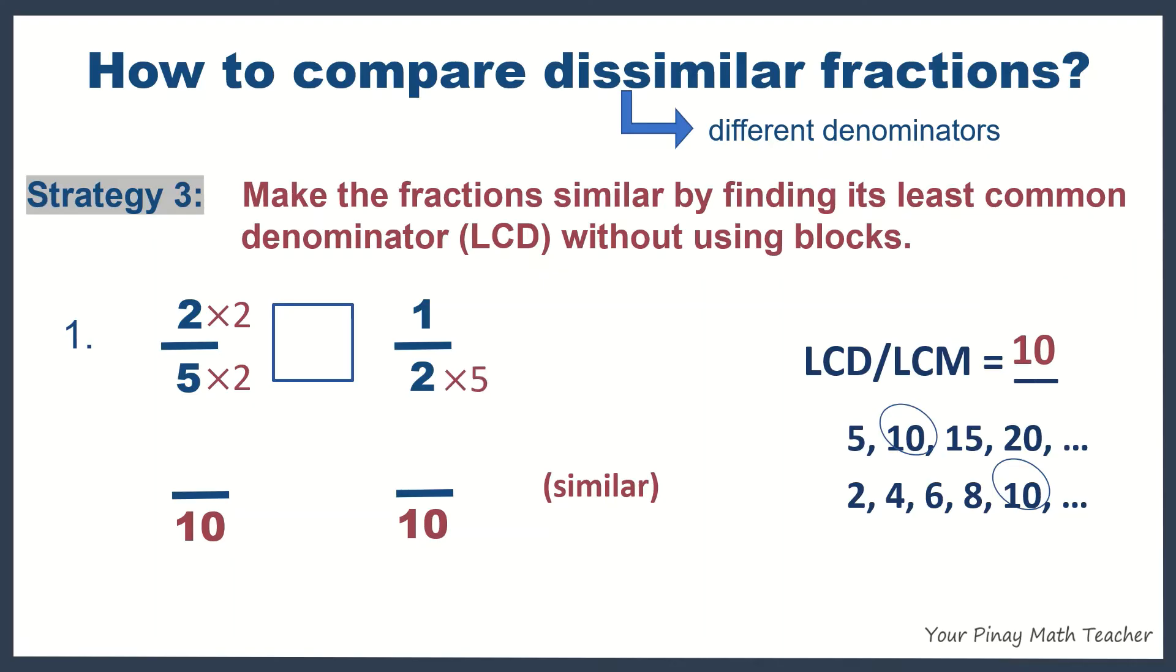Okay, you multiply it by 5. Do the same with the numerator 1. Now, 2 times 2 is 4, 1 times 5 is 5.